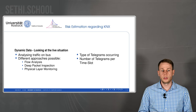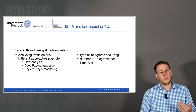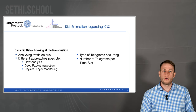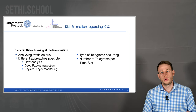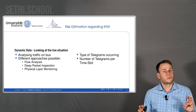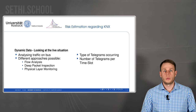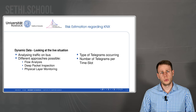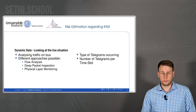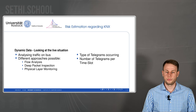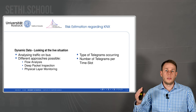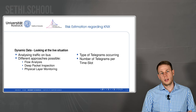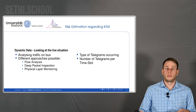Dynamic data is about analyzing the live situation in a network — analyzing the traffic on the bus. There are different approaches: you can do a flow analysis looking only at statistical values such as who is talking to whom and how much data they are transmitting. You can use deep packet inspection, where you look at the actual payload of the telegrams. And you can do physical layer monitoring, where you look if new devices have been attached to the wire but are not talking KNX — examining even below the KNX protocol at the physical level.